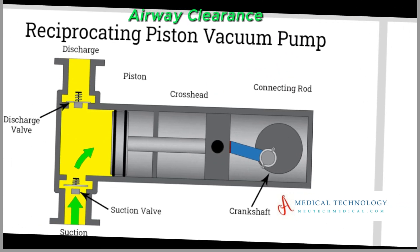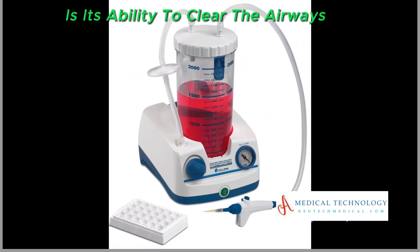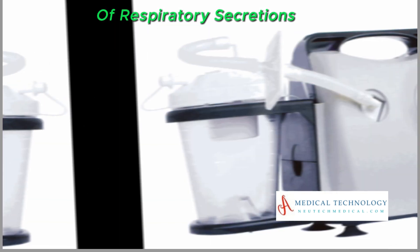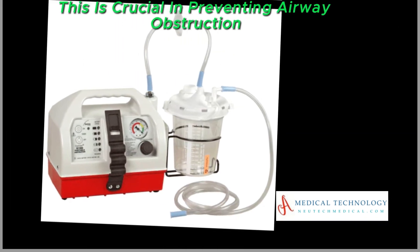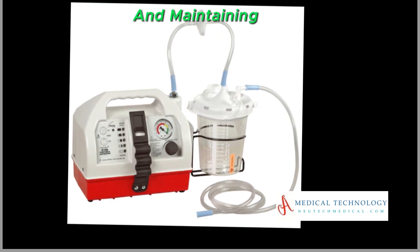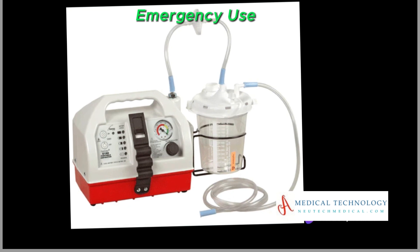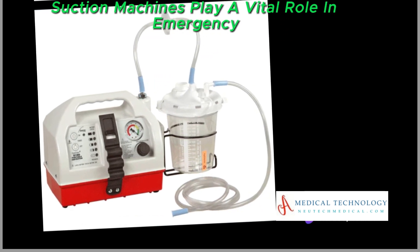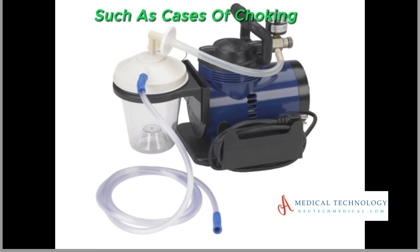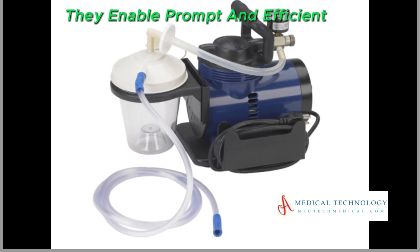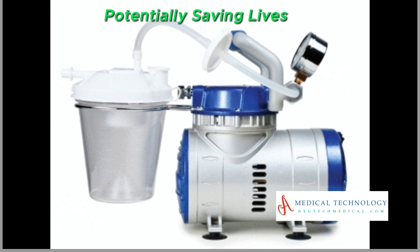Airway clearance: one of the primary benefits of a suction machine is its ability to clear the airways of respiratory secretions, mucus, or other fluids. This is crucial in preventing airway obstruction and maintaining effective breathing. Emergency use: suction machines play a vital role in emergency medical situations, such as cases of choking or respiratory distress, enabling prompt and efficient clearing of the airways and potentially saving lives.